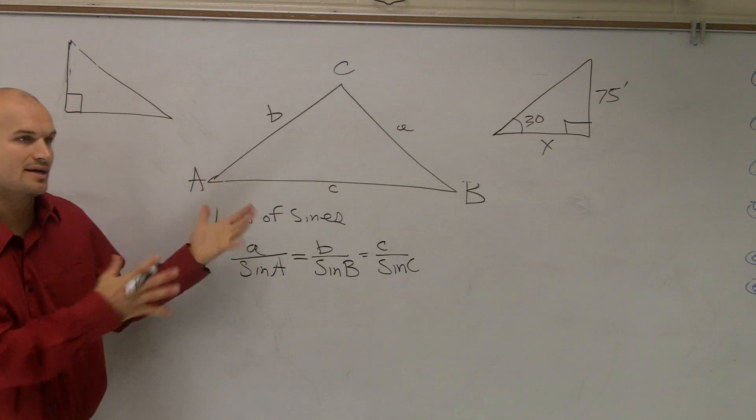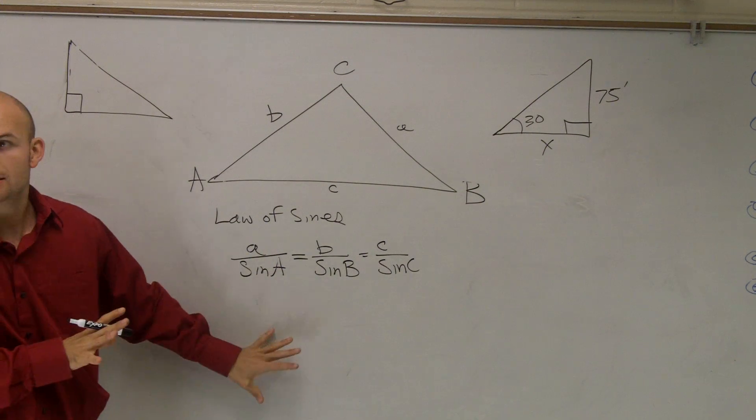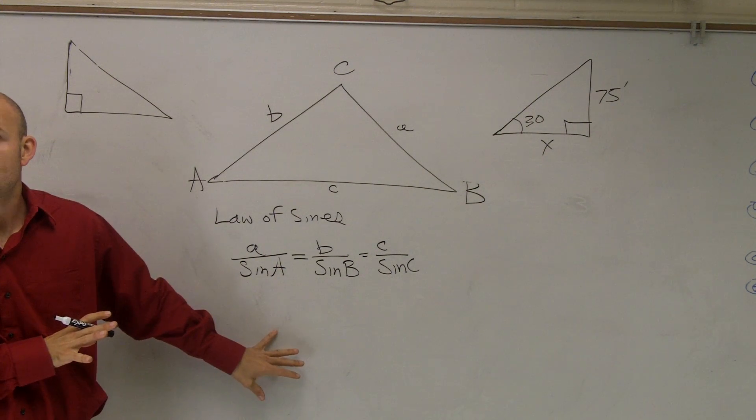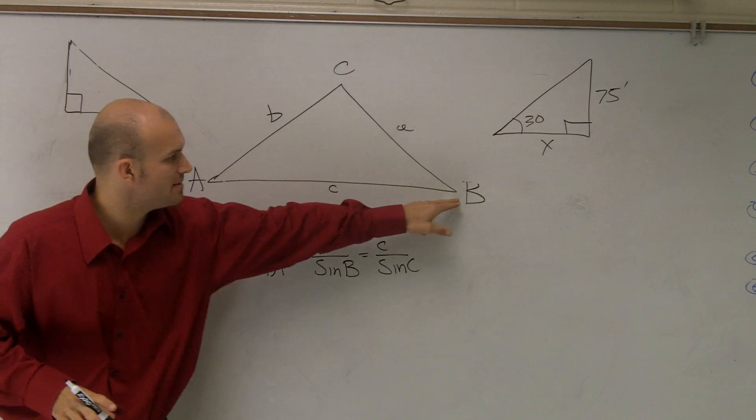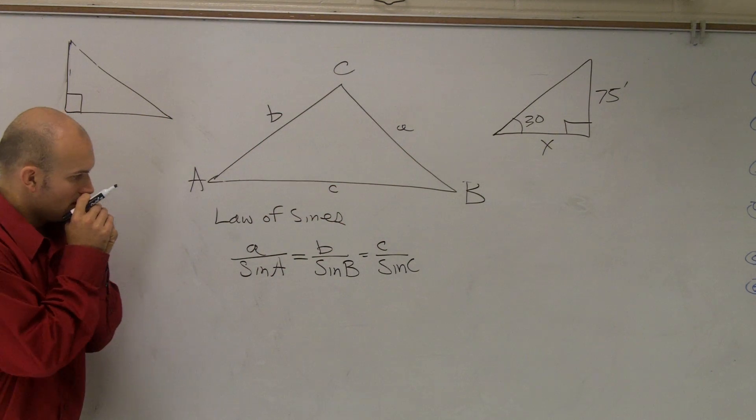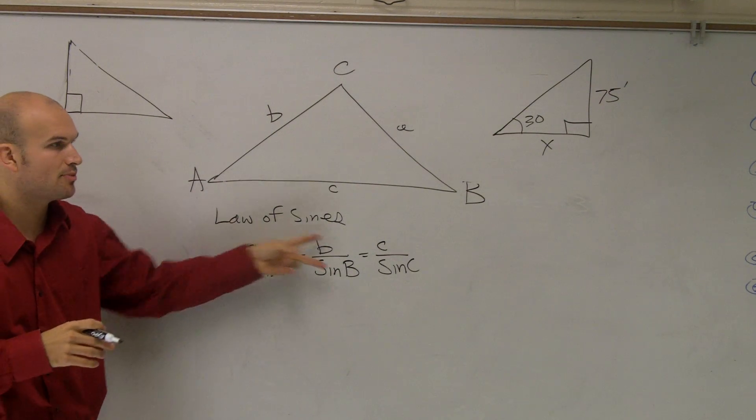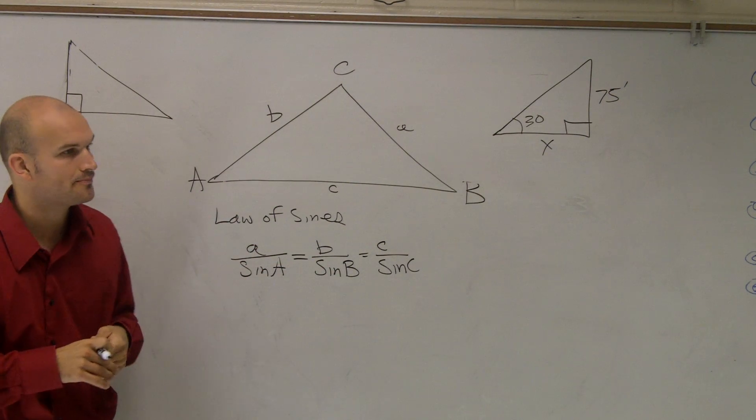But it could be A. Well yeah, it doesn't matter how you label it. Remember, I got that? So does it matter how you label it? No, I mean, it doesn't matter. B over sine B, that could have been A and A. Oh, okay. Yes? So your sine of A, over the lowercase of A? Yeah, it doesn't matter how these are labeled. It's just the proportional relationship. So it could be either. Okay?